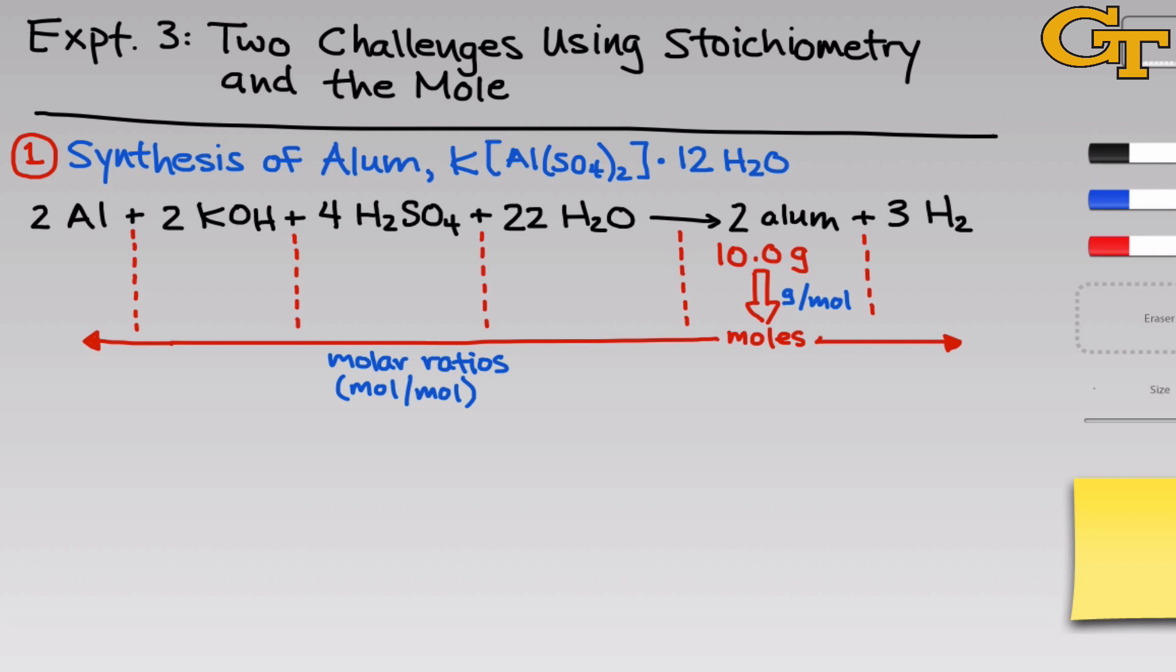Here, molar ratios refers to a ratio of the stoichiometric coefficients involved. So, for example, the molar ratio between potassium hydroxide and alum is 2 to 2, or just 1. The molar ratio of sulfuric acid to alum is 4 to 2, or 2 overall. Once we know the moles of each reactant we need to get the desired mass of alum that we started with, we can convert each of those moles back into mass using the appropriate molar mass in grams per mole. We're just multiplying the number of moles by the molar mass.